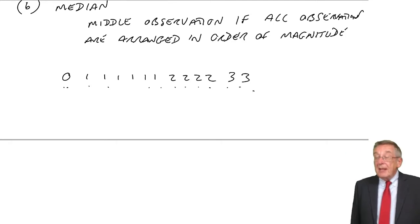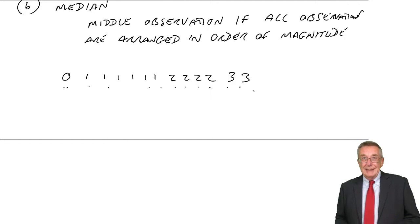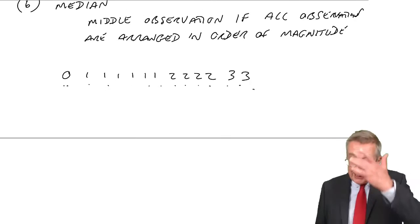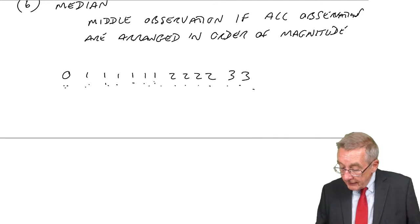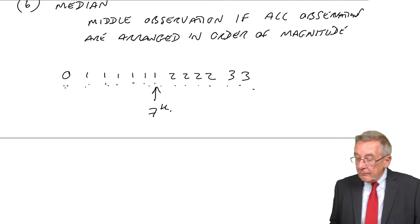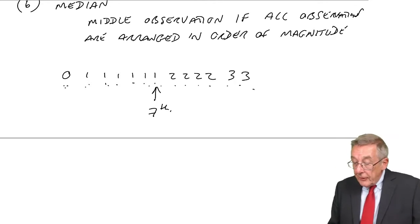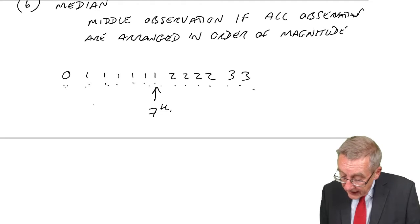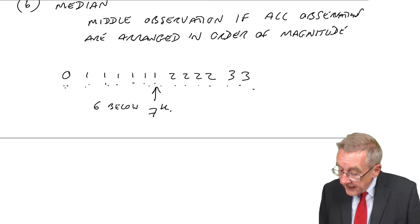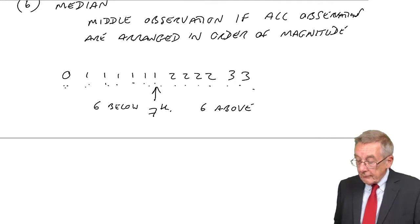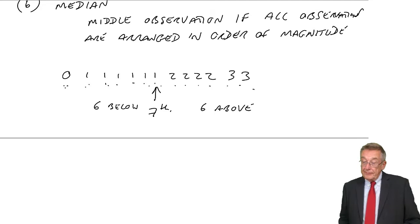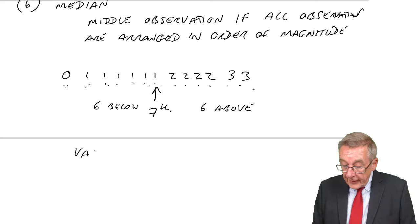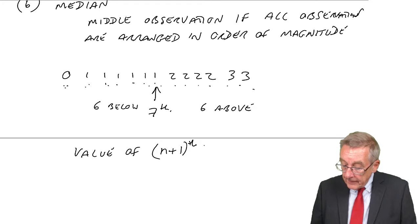And then we say: what's the value of the middle one? The middle one must be number 7, because there are as many above as there are below. You see, there are 6 observations below and there are 6 above. The middle one is the 7th. And so, in general terms, it's the value of the (n+1)/2 th observation, where n is the number of observations.